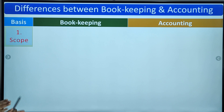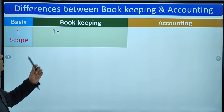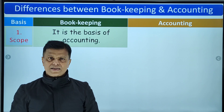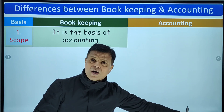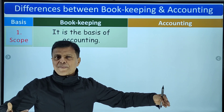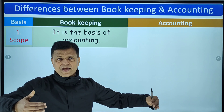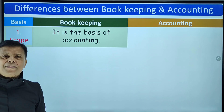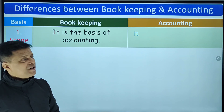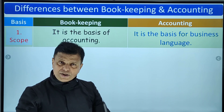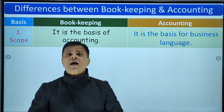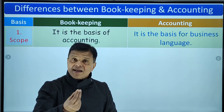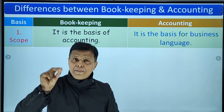Let's differentiate bookkeeping and accounting from their scope. Bookkeeping is the basis of accounting. It is the earlier, first stage — without bookkeeping, no accounting can be done. Accounting is broader in scope: it is the basis for business language. We can communicate relevant information to the users of accounting so that they can make good decisions, which is why accounting is called the language of business.